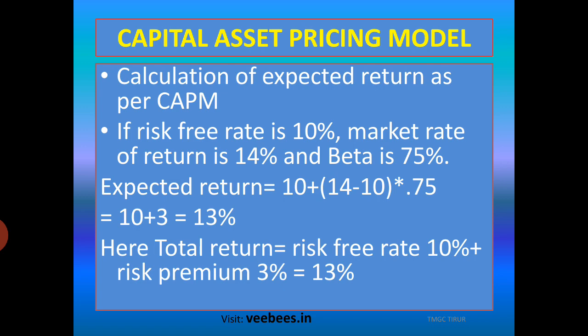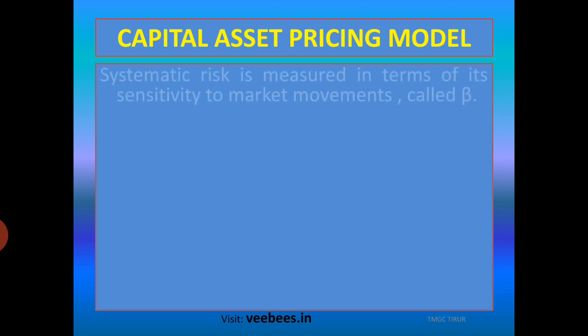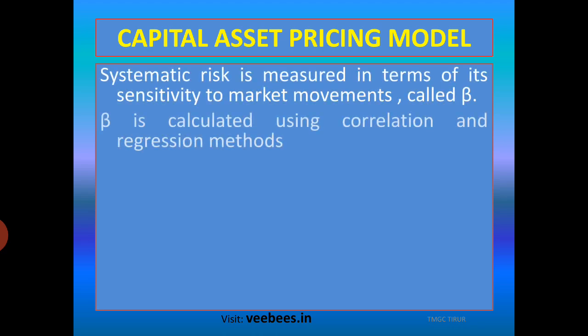The total return is 13%. It has two elements: one element is the risk-free rate, that is 10%, and the second element is 3%, which is termed as risk premium — the higher return for taking the risk. Systematic risk is measured in terms of its sensitivity to the market; it is calculated using the correlation method and regression method.